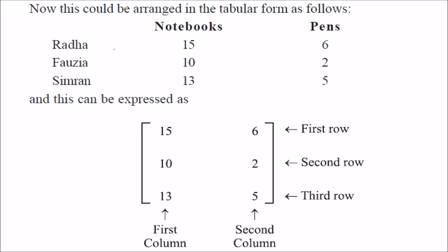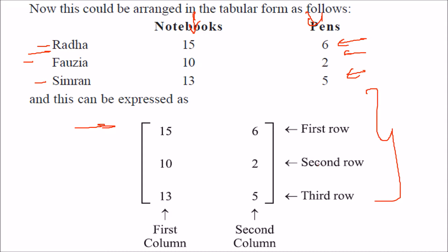We can arrange it in some form — write Radha, Fauzia, Simran as rows and notebooks and pens as columns. This is the first row, second row, third row; this is the first column and second column. This combination of rows and columns enclosed in a square bracket is called a matrix.